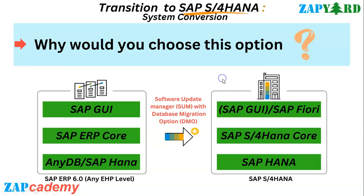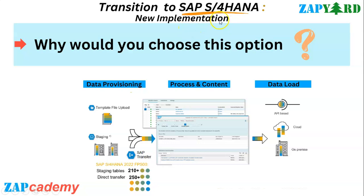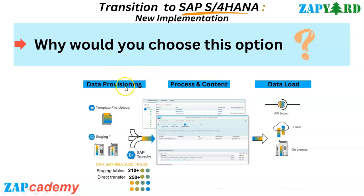Now talking about new implementation — that is your greenfield implementation. It's about deploying a new SAP S4HANA instance, primarily for customers who want to migrate from a legacy system. Customers who plan to migrate from a non-SAP system such as Oracle or other ERP solutions, or from a third-party legacy system, should consider this option. It's also suitable for an SAP system on a very old release prior to ECC 6.0, or one that is highly customized and may not meet the system requirements for a technical system conversion.